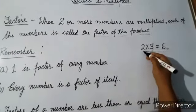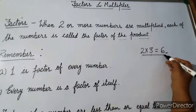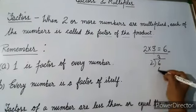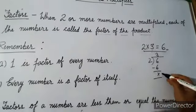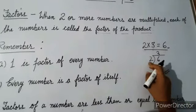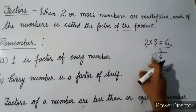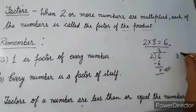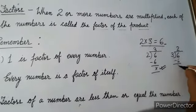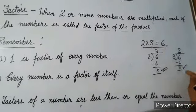When we divide six by two, the answer will be three and the remainder is zero. Remainder zero means six is completely divisible by two. So we can say two is a factor of six. And when we divide six by three, again three times two is six, remainder is zero, so it is completely divisible.